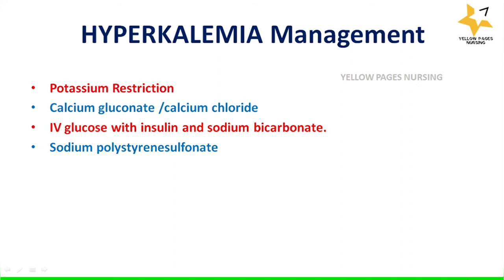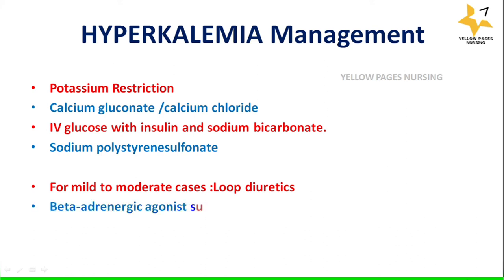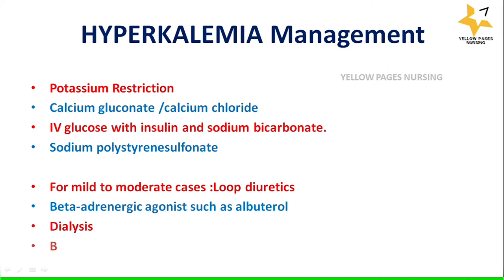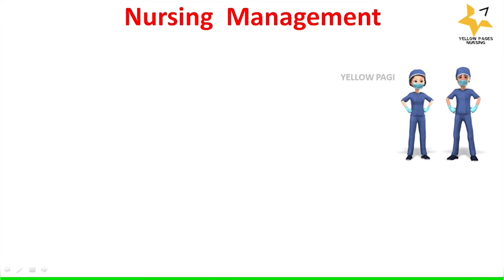Administration of sodium polystyrene sulfonate promotes gastrointestinal sodium absorption and potassium excretion. For mild to moderate cases, loop diuretics are administered. Other management options include beta-adrenergic agonists such as albuterol, dialysis, and blood transfusion.